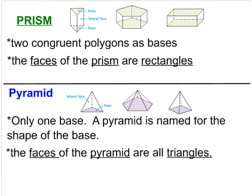A pyramid is different from a prism. A pyramid only has one base, and a pyramid is named for the shape of the base — the base is what it sits on. The faces of a pyramid will all be triangles. For example, a triangle base with all triangle faces is a triangular pyramid. A pentagon base with all triangle faces is a pentagonal pyramid. And a square base with all triangle faces is a square pyramid.